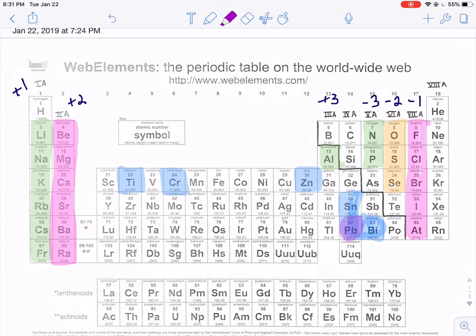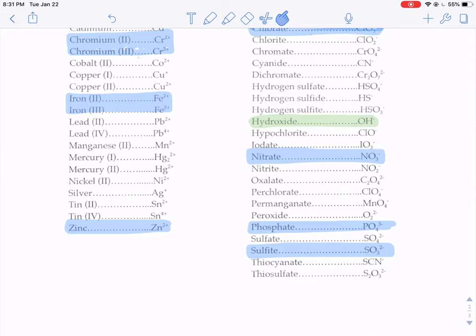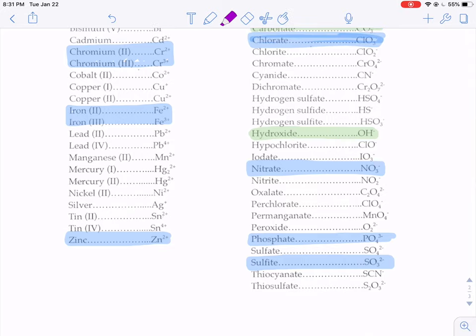You might think that lead is in that column, there might be plus or minus four. Lead can vary. Its charge can fluctuate. It could either be plus two or plus four. So we got to figure out what kind of lead it is in this problem.